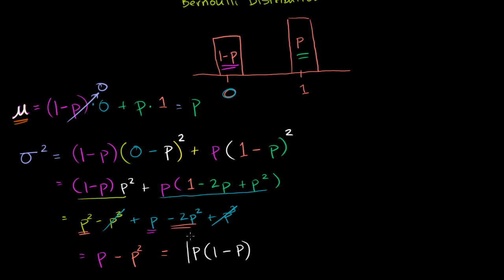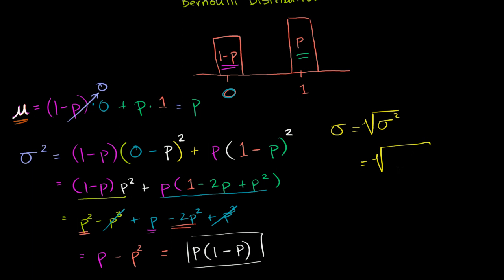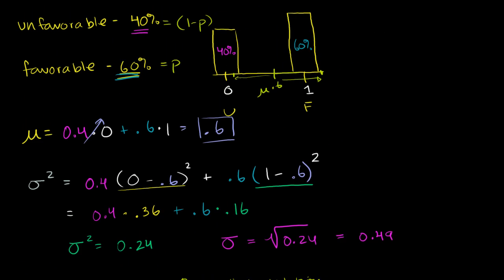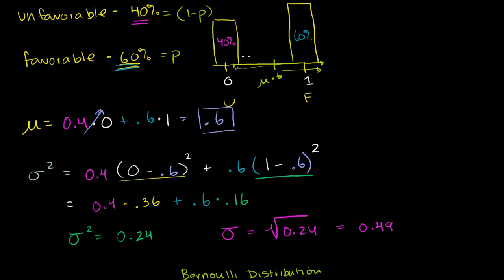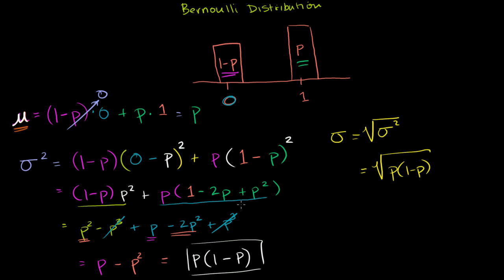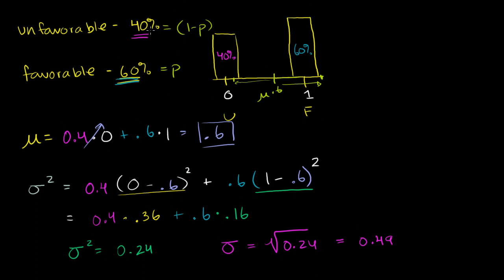So our variance is p times (1 minus p) — a pretty clean formula. The standard deviation is just the square root of the variance, which equals the square root of p times (1 minus p). We can verify this with our earlier example: the mean is p, which was 0.6; the variance is the probability of success times the probability of failure, which is 0.6 times 0.4 equals 0.24 — exactly what we got before. And the square root gives a standard deviation of 0.49. Hopefully you found that helpful, and we'll build on this in inferential statistics.